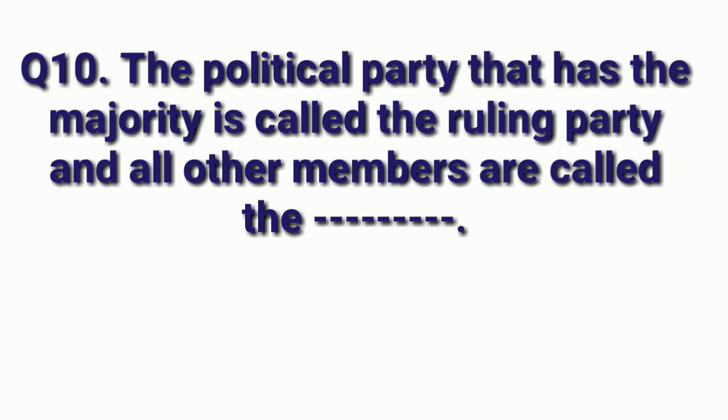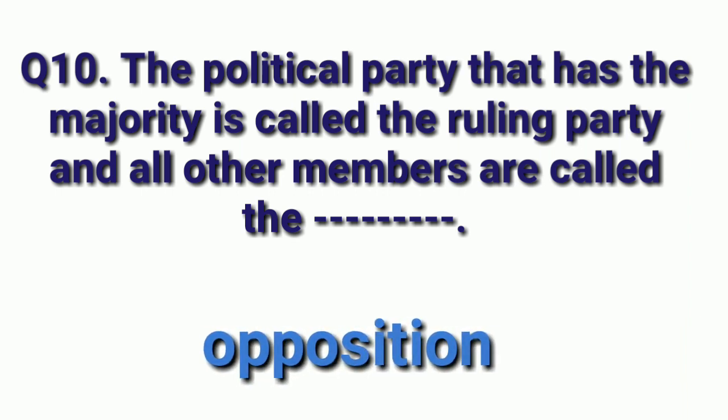Next question: The political party that has the majority is called the ruling party, and all other members are called the blank. Answer is opposition. All other members of the party are called the opposition.